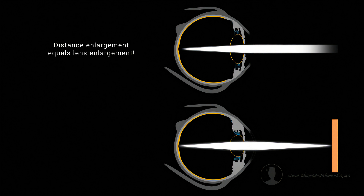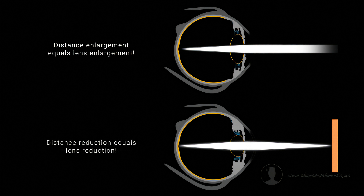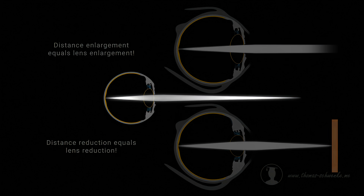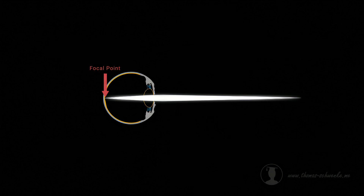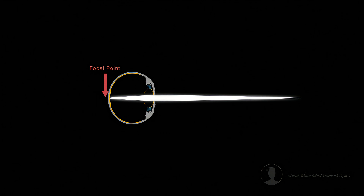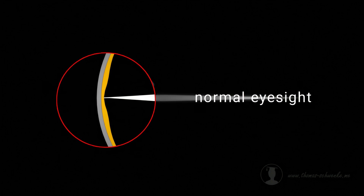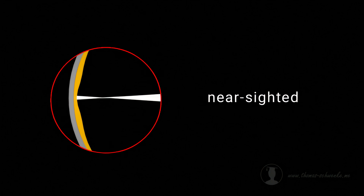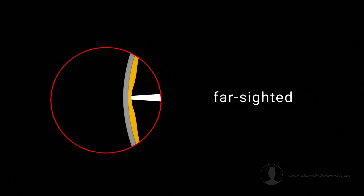So we can say the following. For objects that are far away, the ciliary muscle relaxes and the lens becomes larger. For objects that are close, the ciliary muscle contracts and the lens becomes smaller. However, there are also situations in which the eyeball is deformed. If the eyeball is too long, the focal point is in front of the retina — this is called near-sightedness. And if the eyeball is too short, the focal point lies behind the retina — this is called far-sightedness.